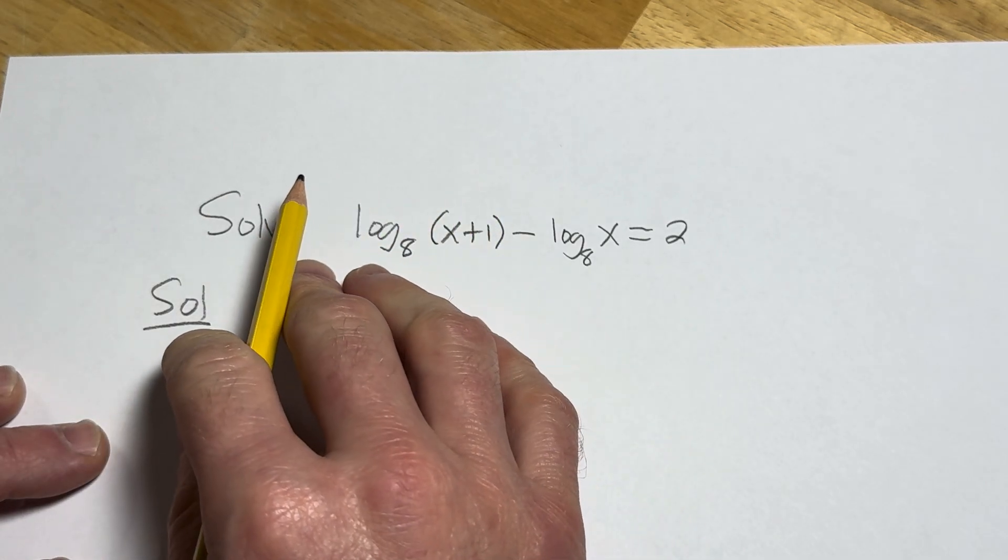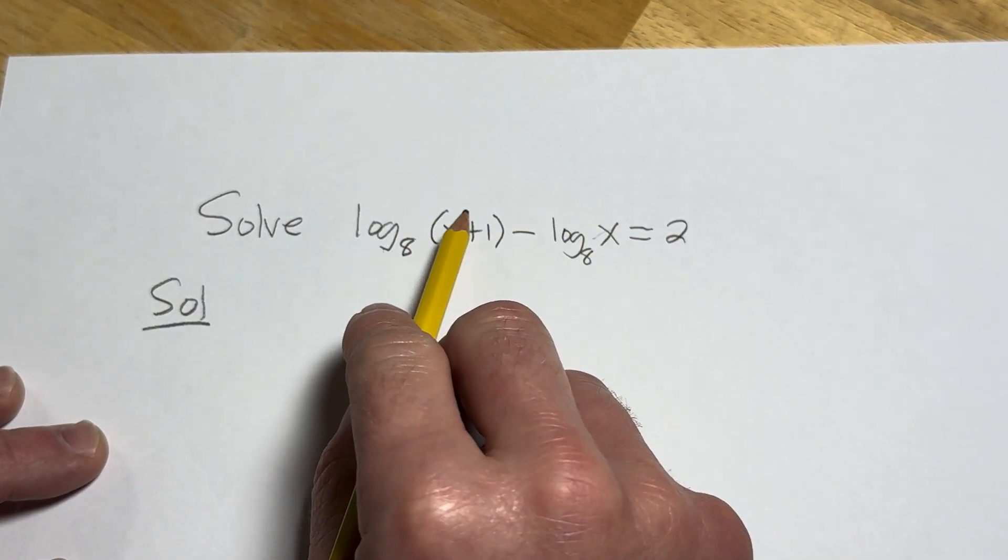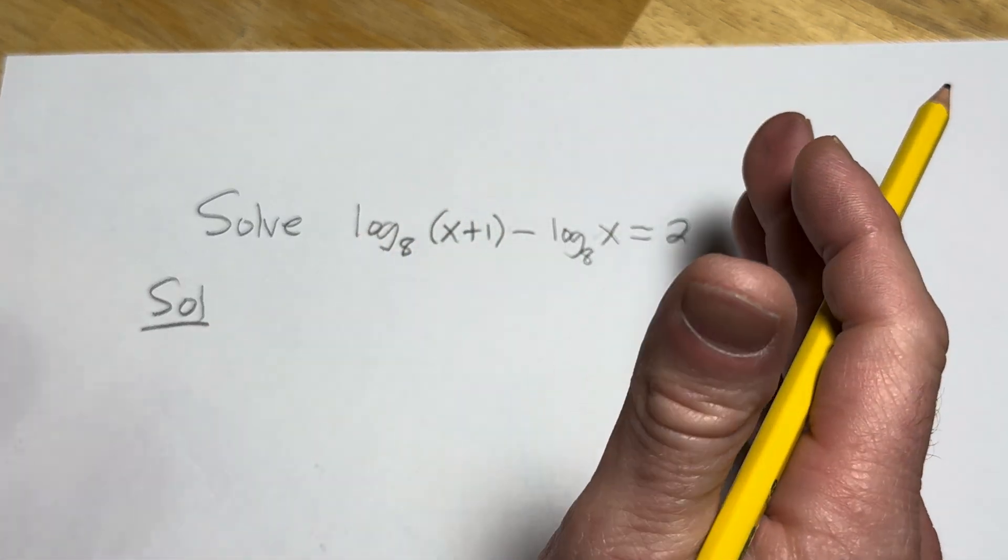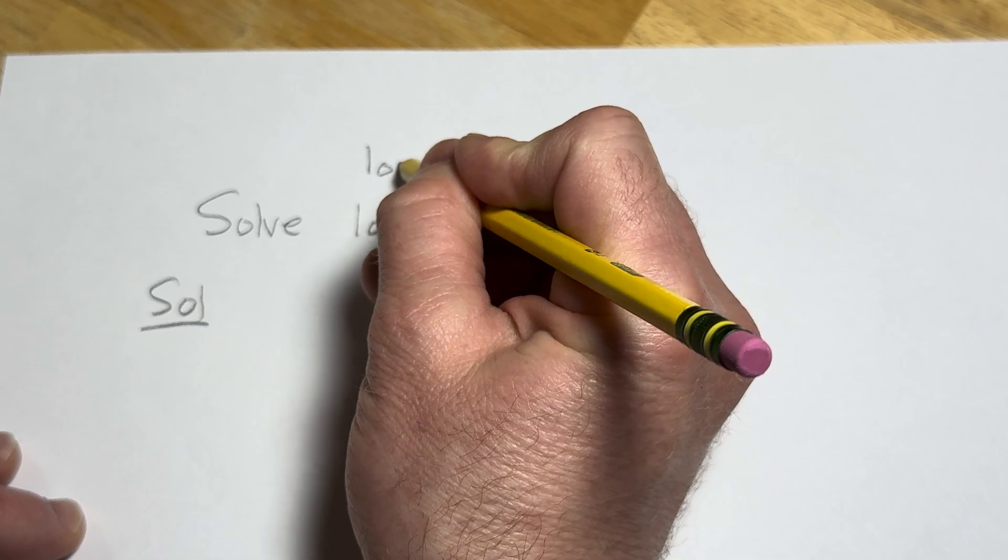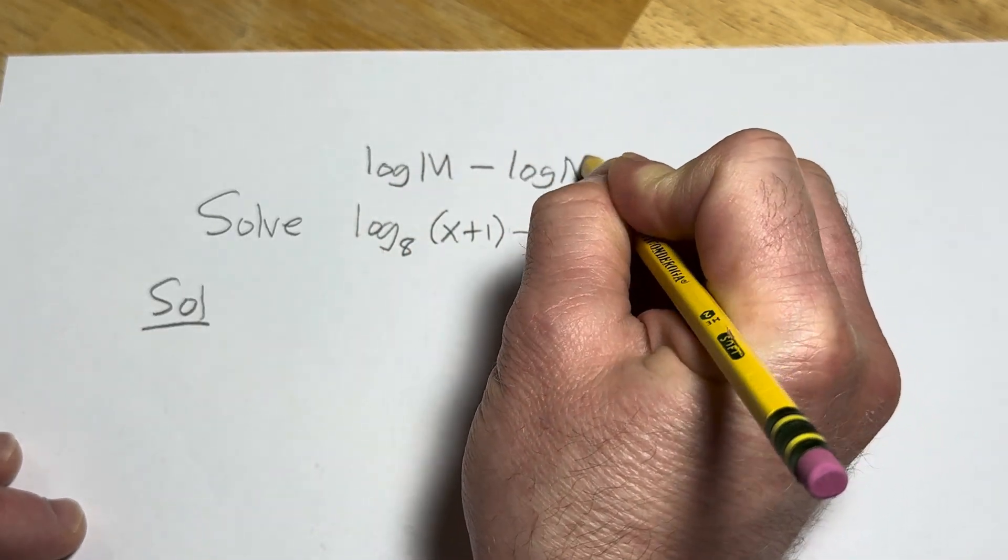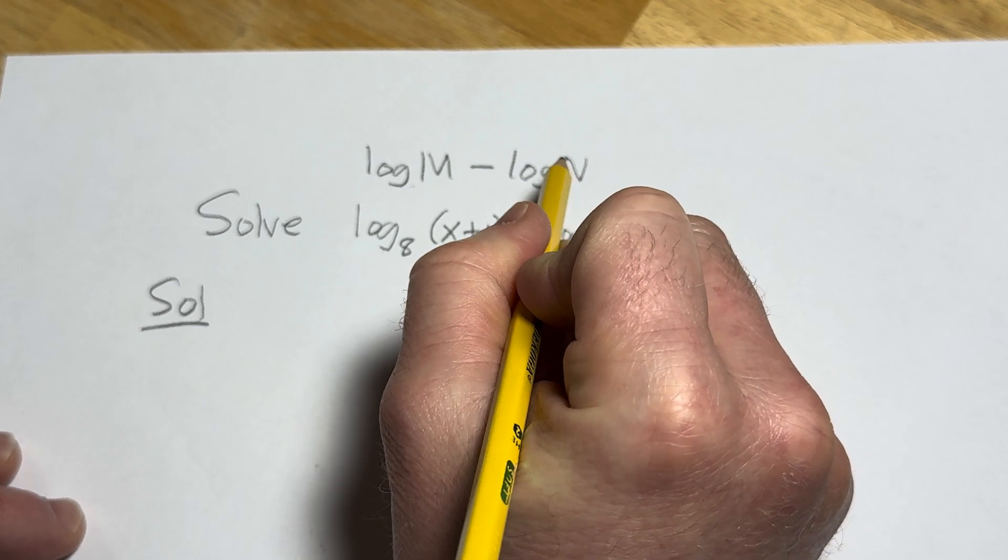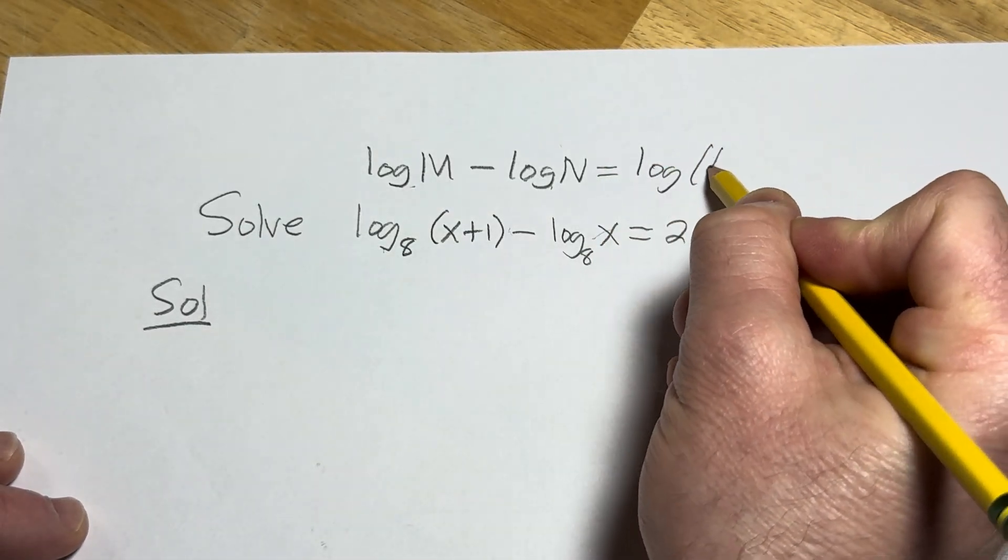So to solve an equation like this, we're going to use one of the properties of logarithms. Because we have two logs and we have a minus sign, this indicates that we probably should use something called the quotient rule. The quotient rule says if you have the log of m minus the log of n, and m and n are positive numbers, it's really important, this is equal to the log of m over n.